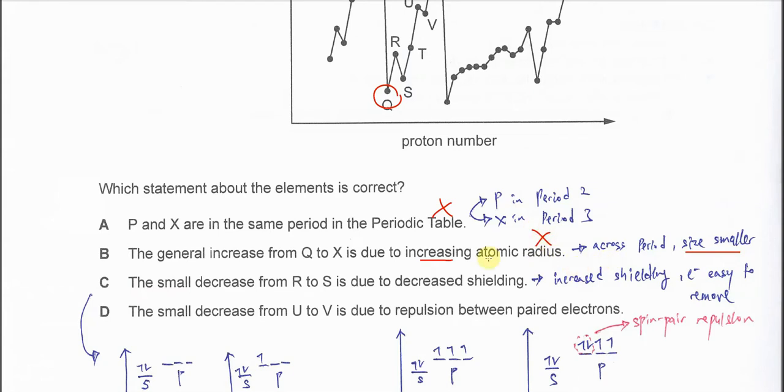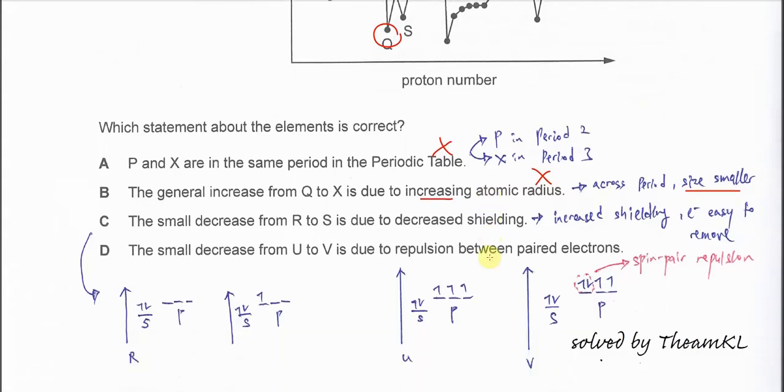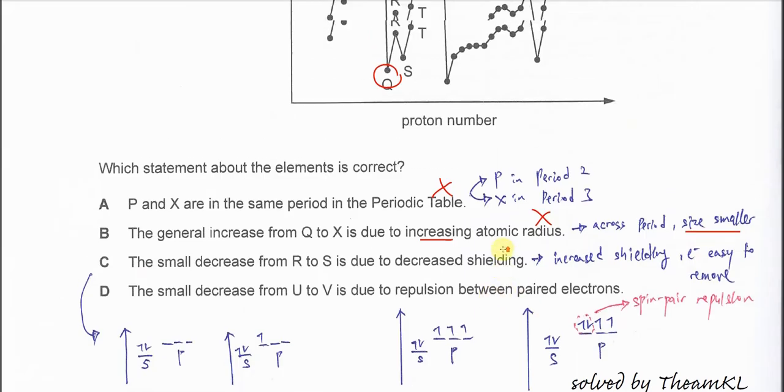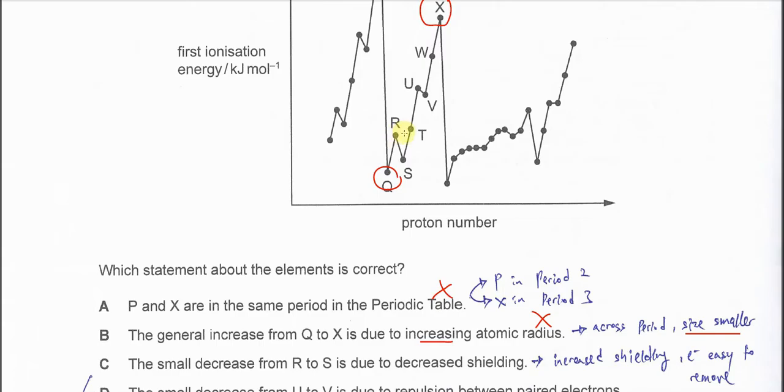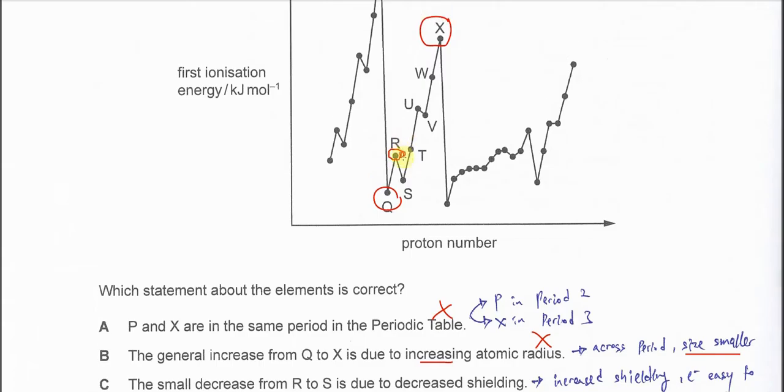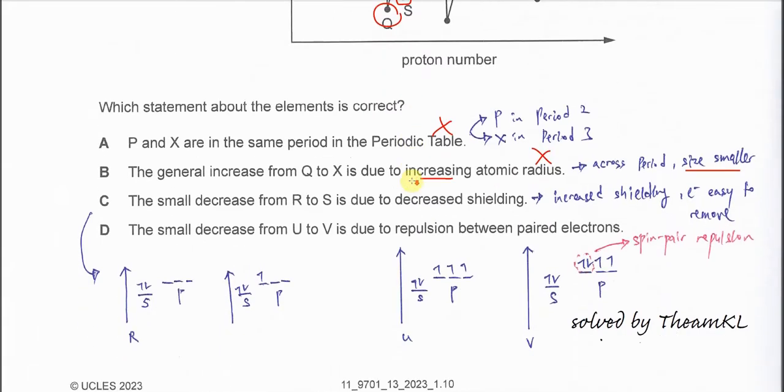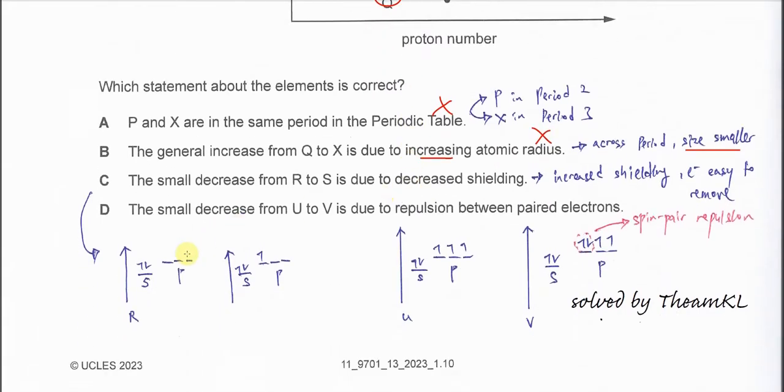C. The small decrease from R to S is due to decreased shielding. Small decrease means from group 2 to group 13. This small decrease is basically because of this. So R is here, S is here. So R is group 2, S has three valence electrons.